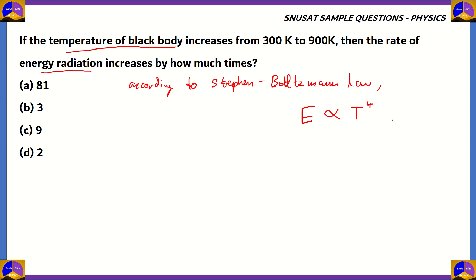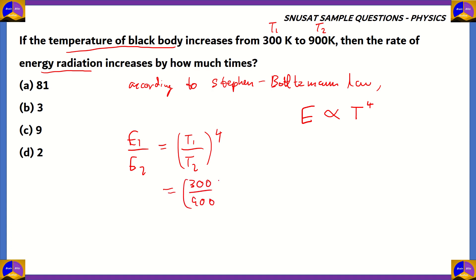We're going to apply this for our black body. T1 is 300 degrees Kelvin and T2 is 900 degrees Kelvin. So, E1 over E2 — that's initial energy over final energy — equals T1 over T2 raised to the power of 4. So, we have 300 over 900 raised to the power of 4. The two zeros cancel, and 3 goes into 9 thrice, giving us 1 over 3 to the power of 4.